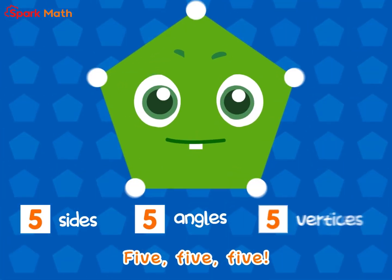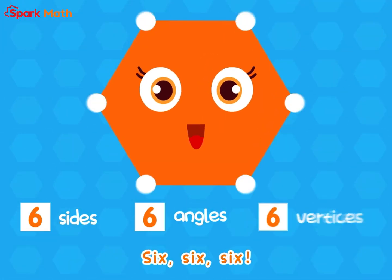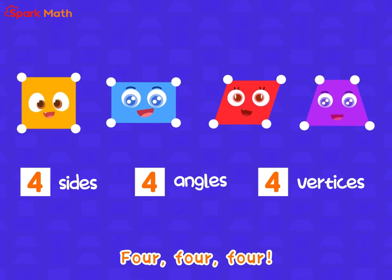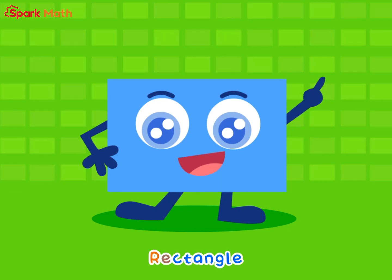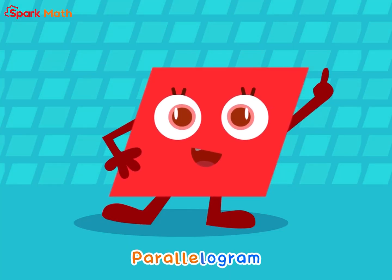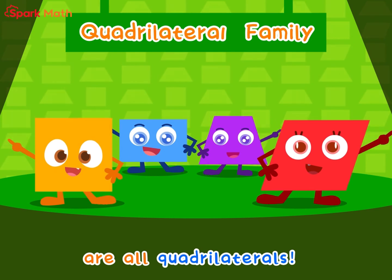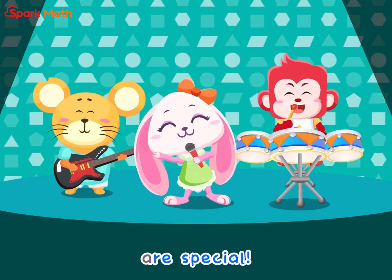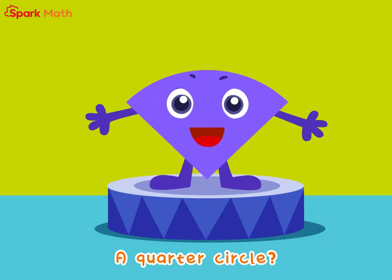A pentagon: five sides, five vertices, five angles. A hexagon: six sides, six vertices, six angles. Quadrilateral shapes have four sides, four vertices, four angles. Square, rectangle, parallelogram, and trapezium are all quadrilaterals.